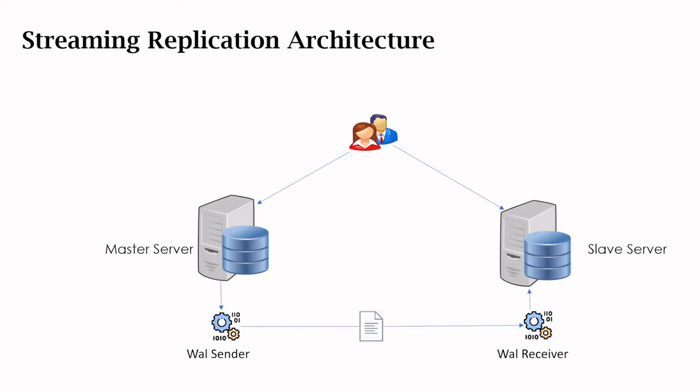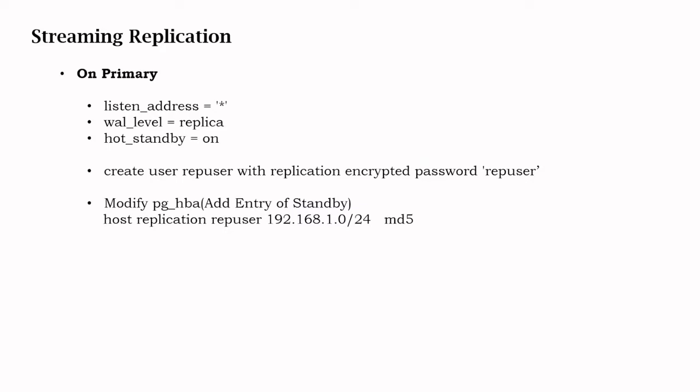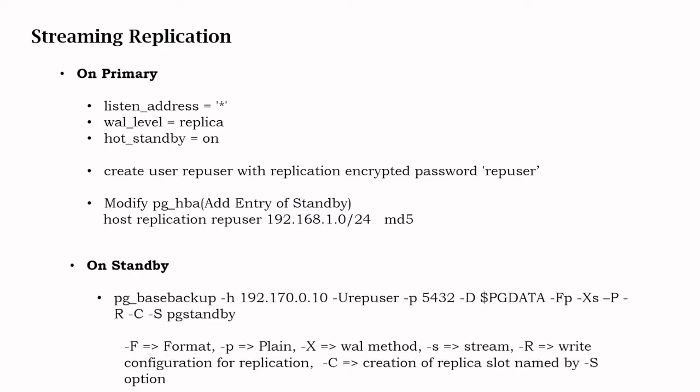Now let us see what parameters are required for streaming replication. On the primary we require these parameters: listen_address is set to star so it can accept connections from any IP or DNS. WAL level is set to replica so it logs all operations required for replication. hot_standby is basically to allow reading the standby server.